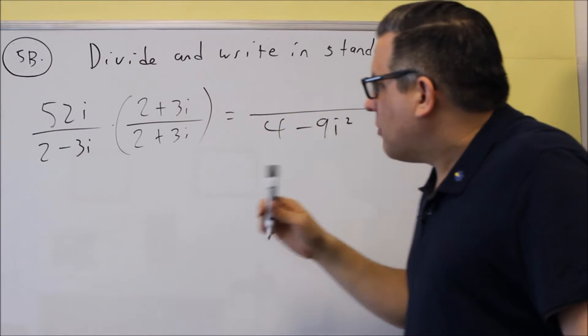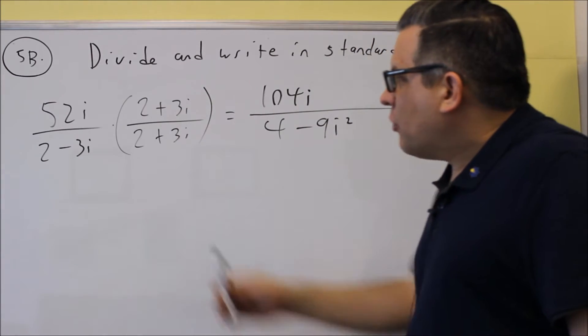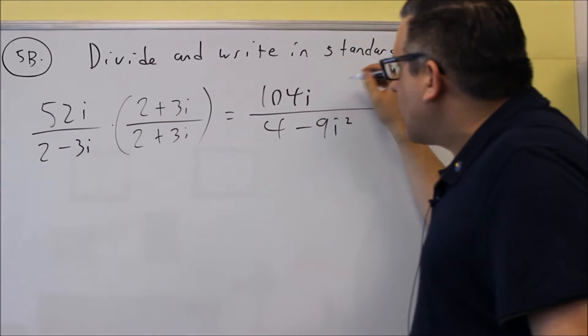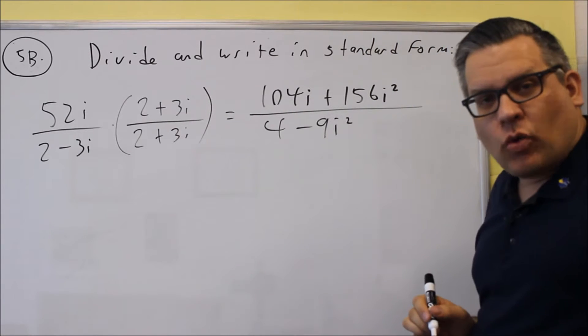Now on top you're going to do 52 times 2, that's 104i. And then we're going to do 52 times 3, that's going to be 156, but that's going to be i squared.